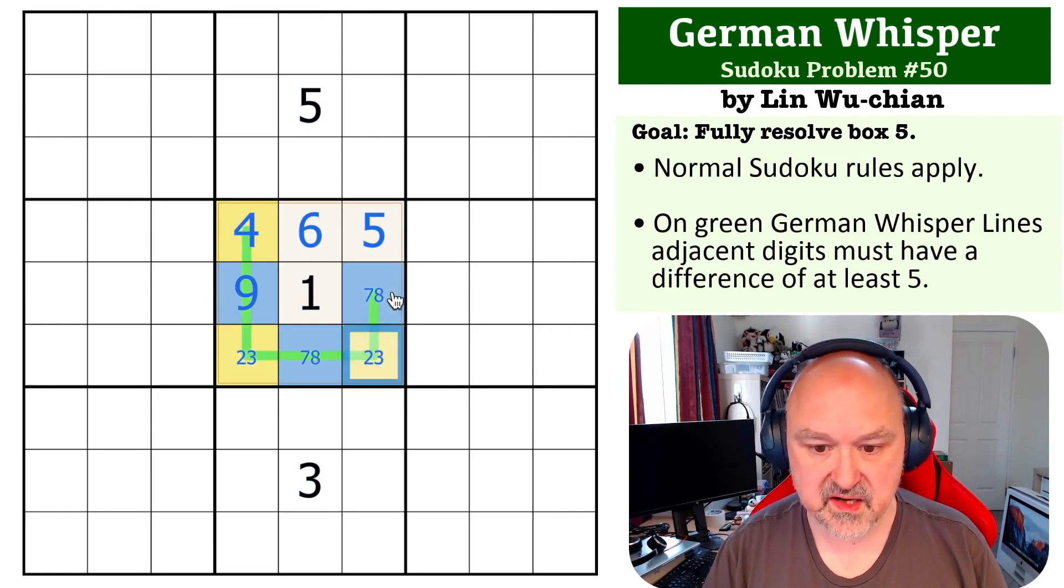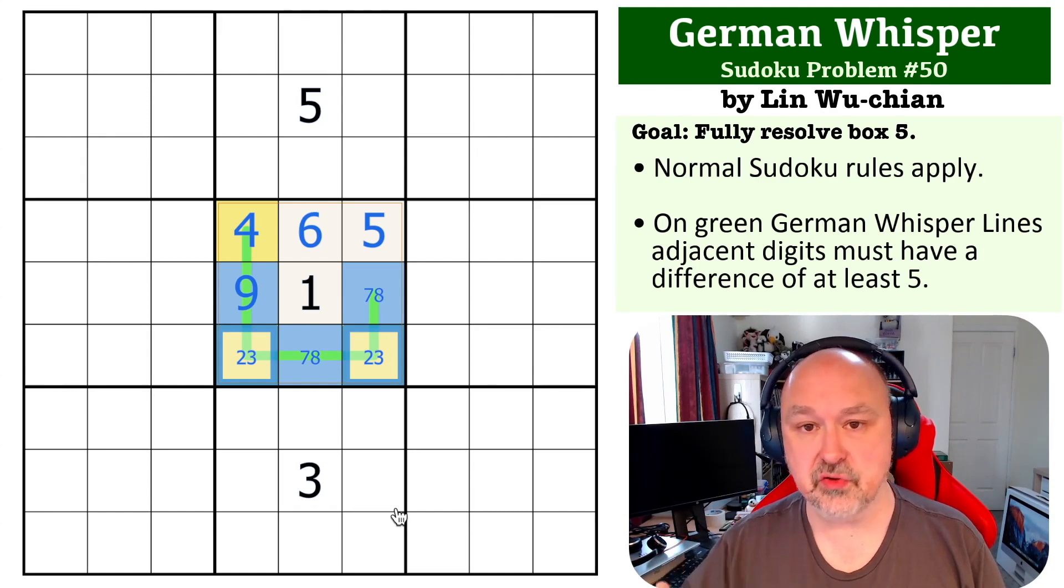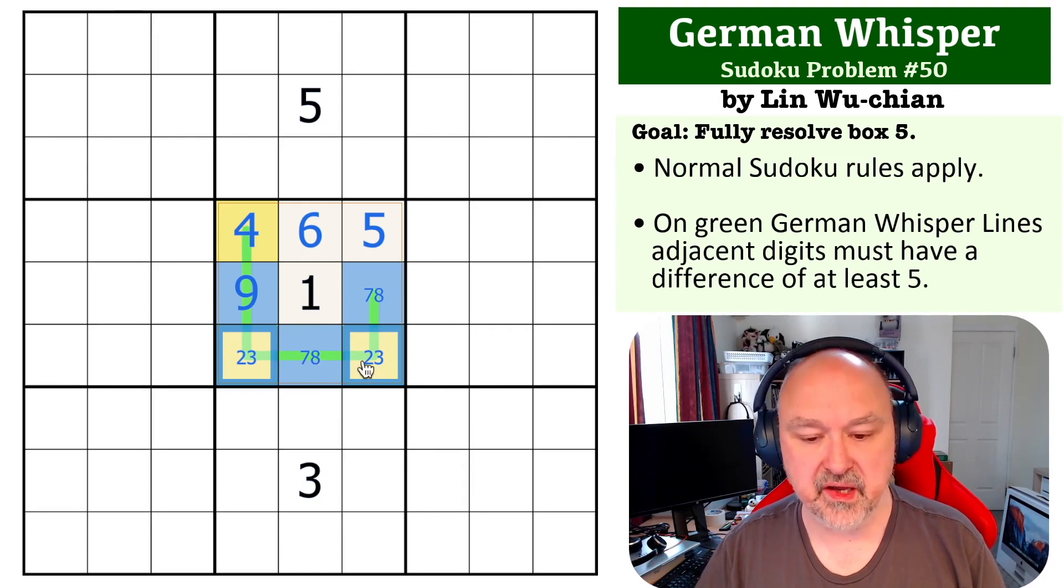We're getting rid of the corner pencil marks. Now, one of these has to be three, and because one of them has to be three, that means that seven is not five away from three. So because we don't know which one is three yet, we will find out pretty quick, but because we don't know one of them is three, this has to be the eight in the middle, this becomes the seven.